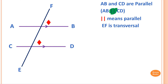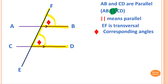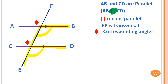For example, this pair of angles here we call corresponding angles. Corresponding angles look like the letter F. So this angle here and this angle here form an upside-down F. Or this pair of angles here — there you go — is the letter F, and these are corresponding angles.